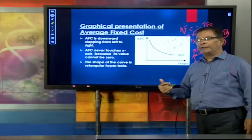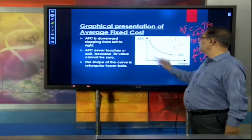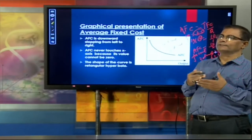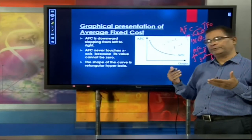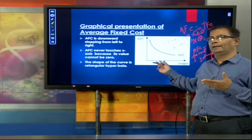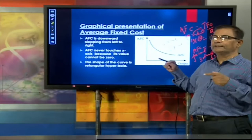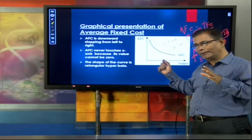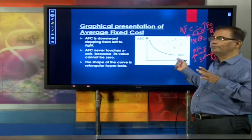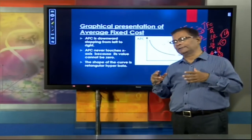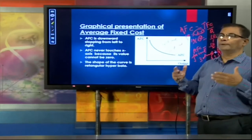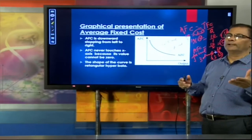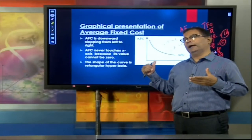After obtaining these values, we depict all amounts on graph. What we see is that the graph is sloping downward. Can AFC touch the x-axis? No — because average of any number cannot be 0. So there will be a needle-like gap between the x-axis and the value of AFC — it will never touch the x-axis. The shape of the curve is rectangular hyperbola in nature, meaning any area taken under this curve will be equal to each other.